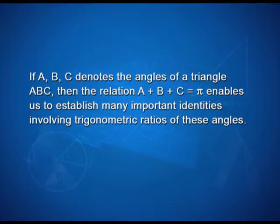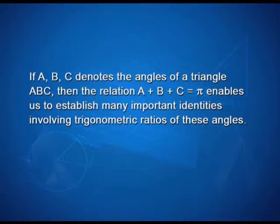If A, B, and C denote the angles of a triangle ABC, then the relation A plus B plus C is equal to pi enables us to establish many important identities involving trigonometric ratios of these angles.